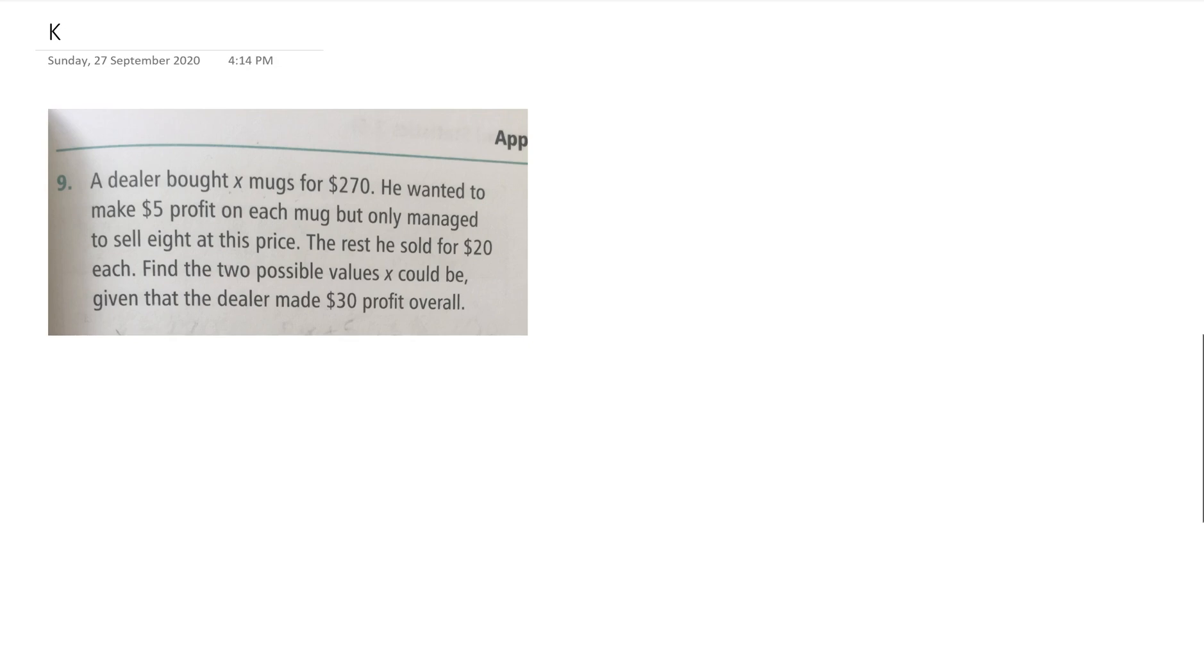The first thing is that the dealer bought X number of mugs for $270. We don't know what the cost of each mug was, so we can say that each mug costs 270 divided by X, because $270 is for the total number of mugs. If we divide it by X, we get what each mug actually costs.